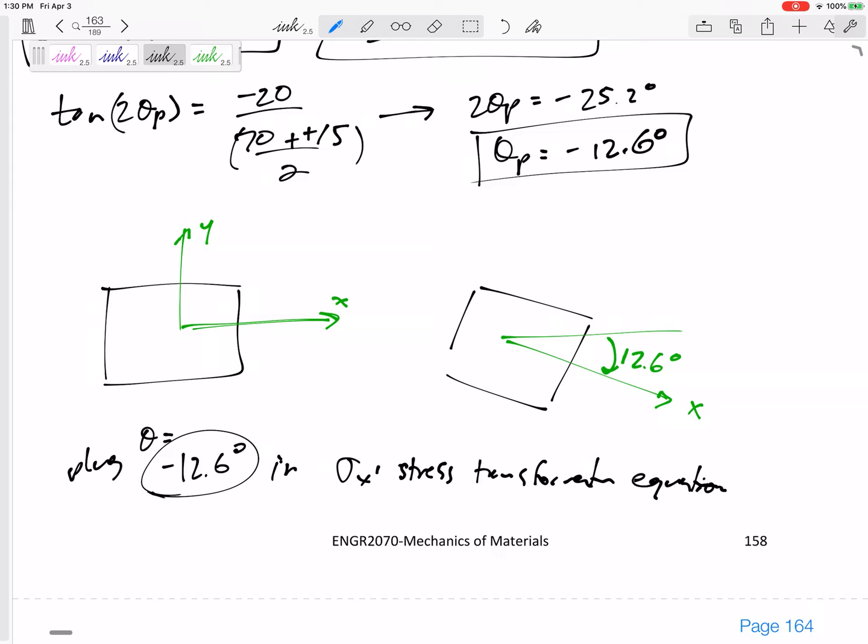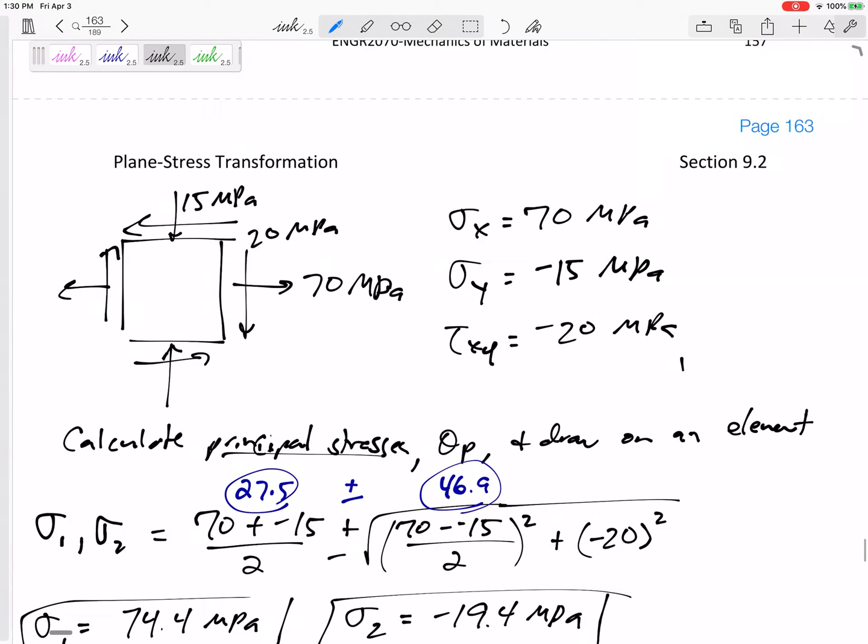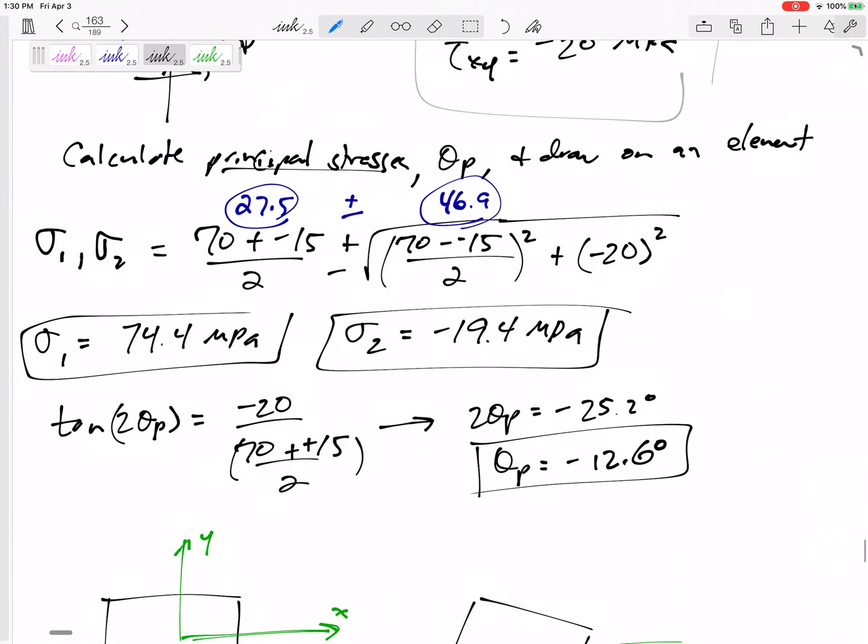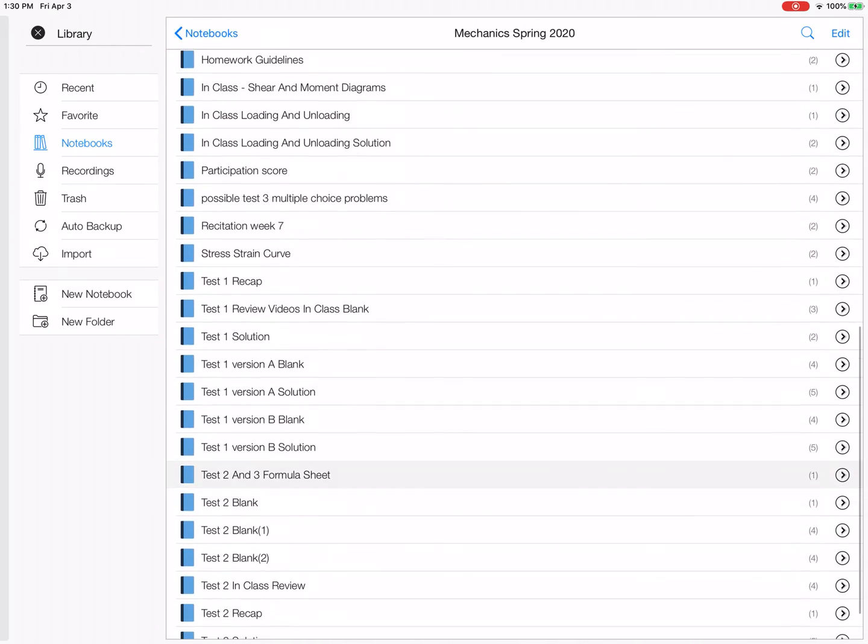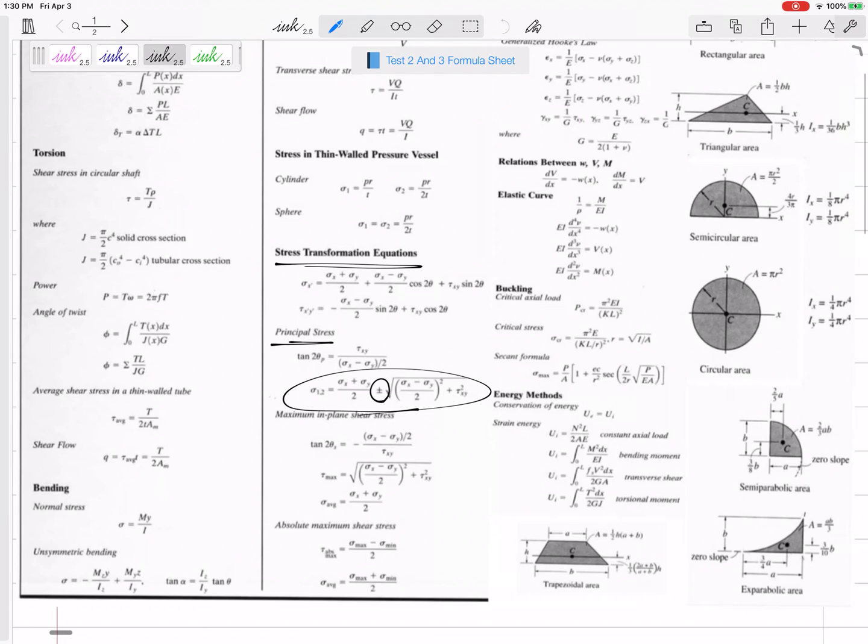Alright, plug in a theta of negative 12.6 and also plug in our original sigma x, sigma y, tau xy. Let's go to that formula sheet. So I'm not going to look at principal stress equations right there; I'm going to look back at this equation right here. Plug in negative 12.6, negative 12.6, plug in negative 20, plug in 70—so you know, my original, not my new.